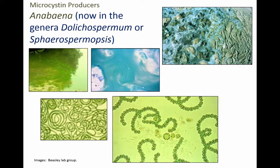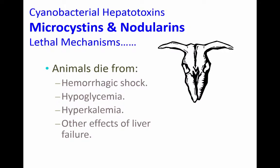Here's another microcystin producer, Planctothrix, which was previously called Oscillatoria, so you may see either name in the literature. Here's a different-looking microcystin producer, Anabaena, which has also changed its name — now called Dolichospermum or Sphaerospermopsis. Even though it can sometimes produce microcystins, it is often known for its neurotoxins. Microcystins and nodularins are hepatotoxins, and animals often die from hemorrhage into the liver, sometimes generalized hemorrhage, from hypoglycemia, hyperkalemia, or other forms of liver failure.